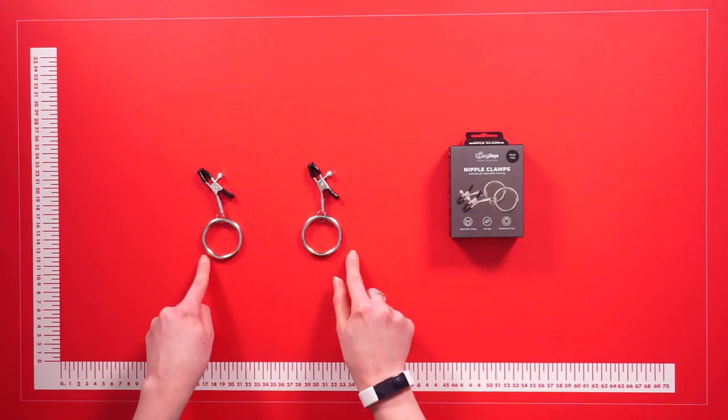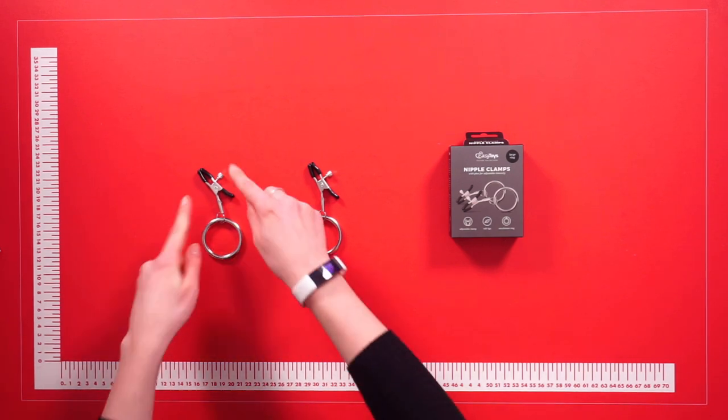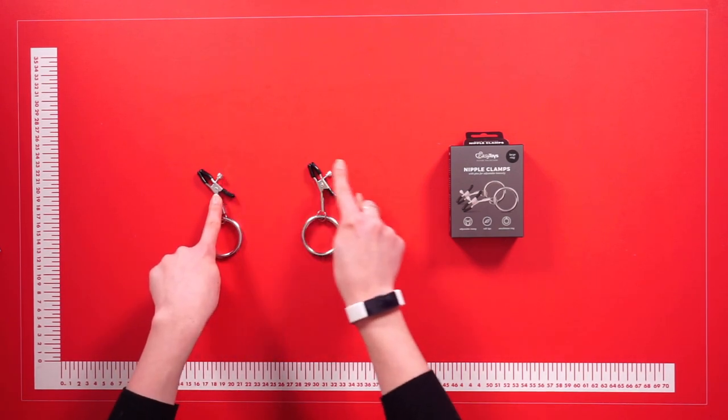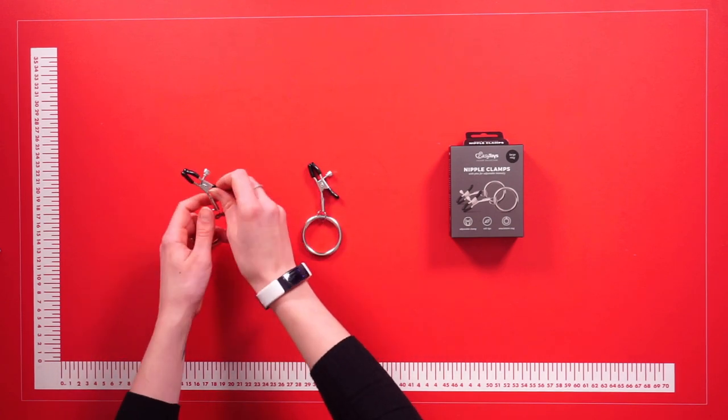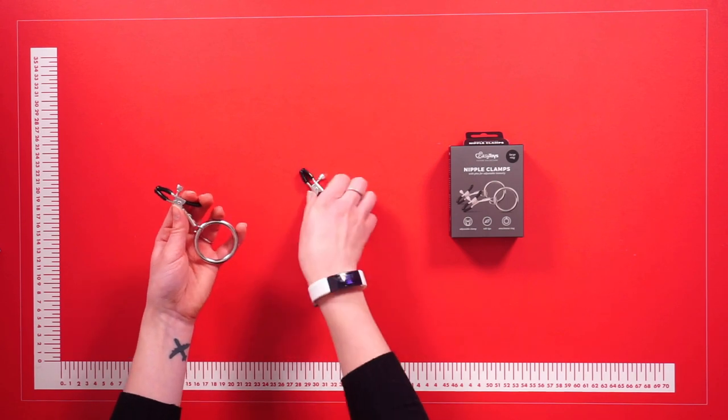And you can use it to attach the clamps to a bondage rope, a bondage chain, or a harness. And thanks to the screws on the side of the clamps, you can easily adjust the pressure of the clamps on your nipples as well, so the choice is really up to you.